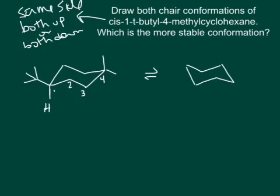But if the tert-butyl goes up, that means the methyl on carbon four also has to be in the up position. So this is one chair conformation. Now to do the other chair conformation, we take the carbon on the far left and flip it up. The carbon on the far right was up, so we flip it down.